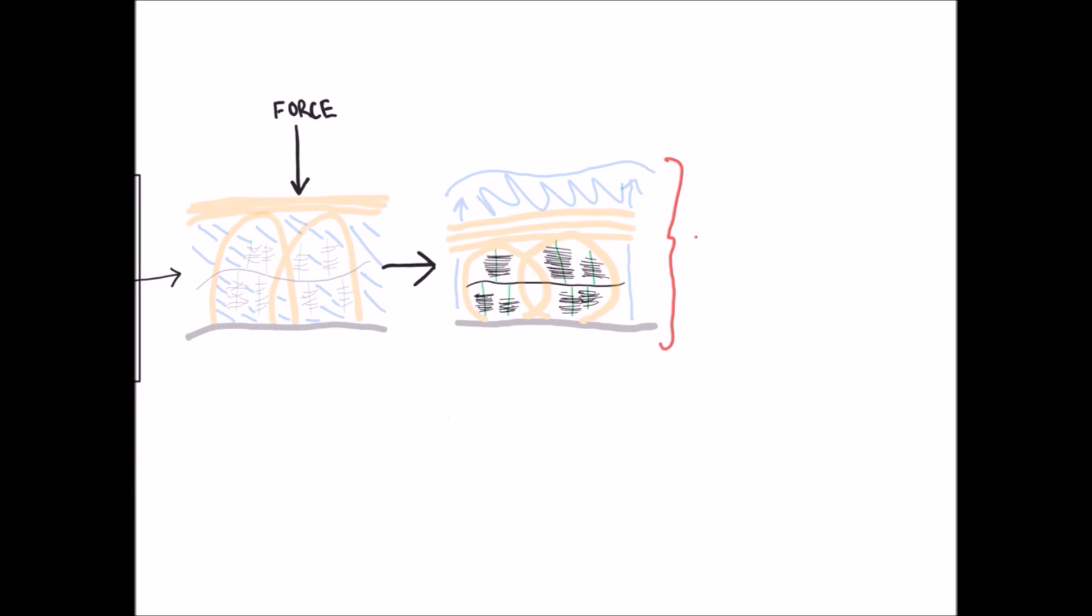One important note is that cartilage, for the most part, is avascular, and this means that nutrients only get to these tissues by diffusion.